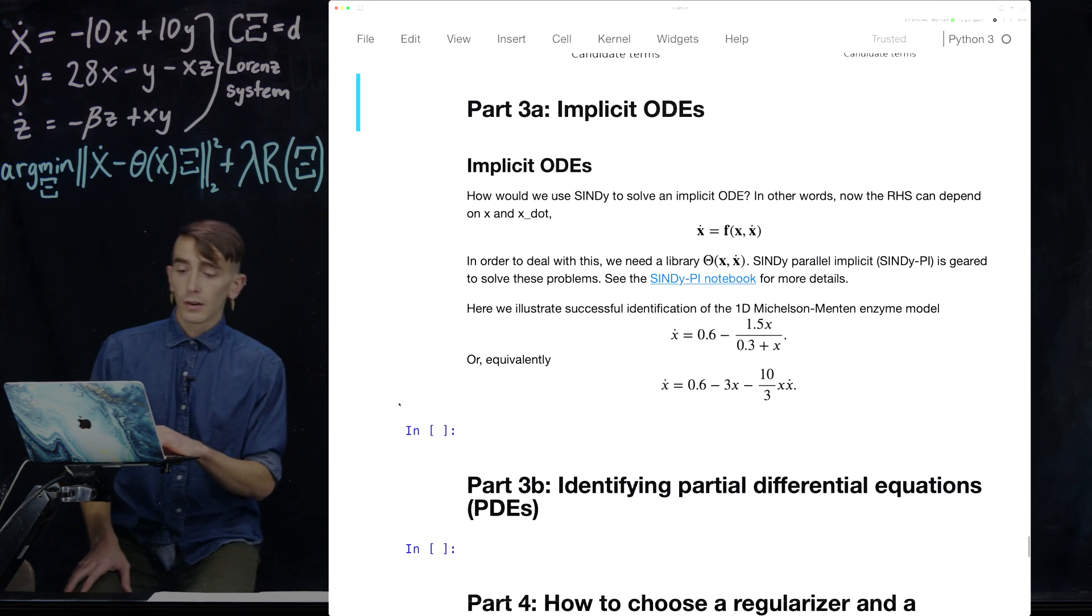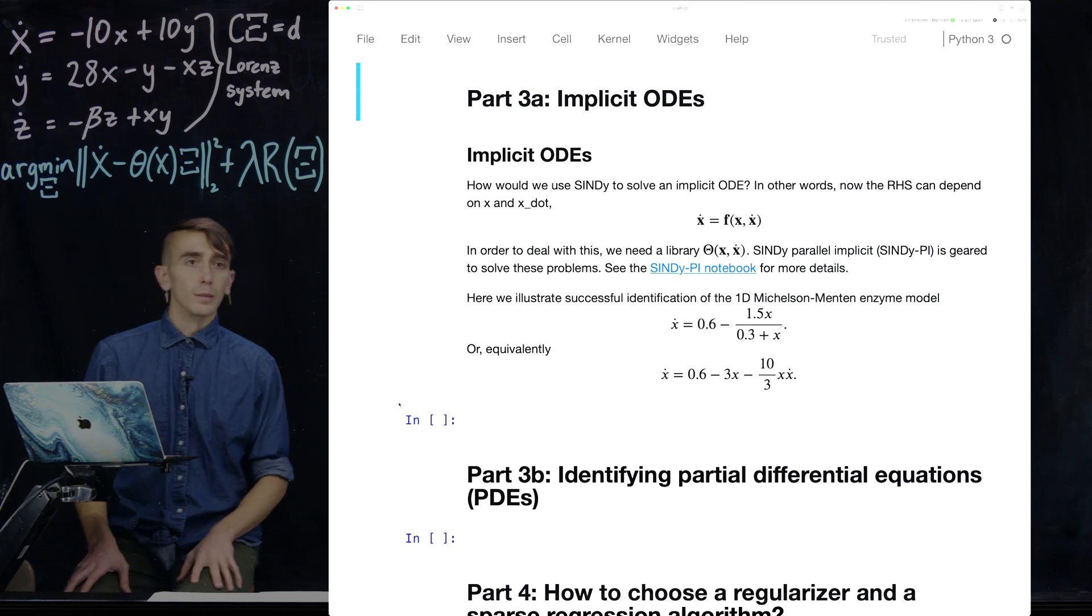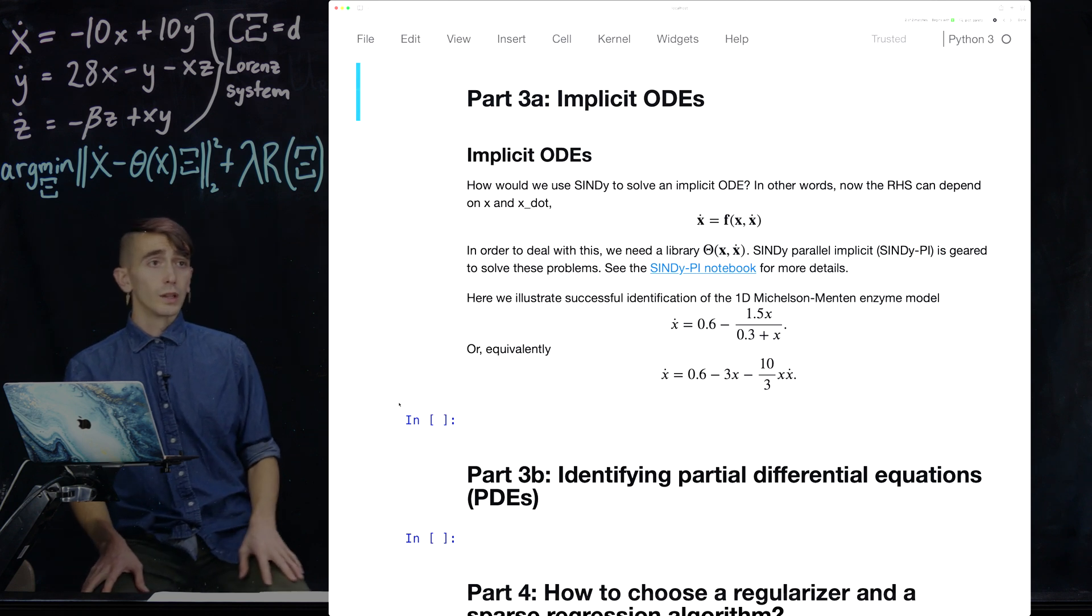So that's all I wanted to show for the weak formulation. If you want some of the more technical details, I recommend you check out the papers I mentioned. And these sorts of techniques continue to evolve. But this is a really good thing to use in PyCindy if you're worried about this level of noise in your data. It really, really improves the robustness of things. So from here on, we're just going to briefly discuss implicit ODEs before we wrap up this video.